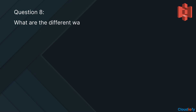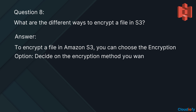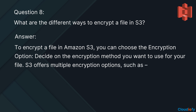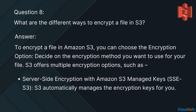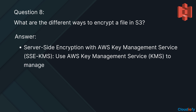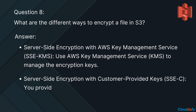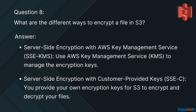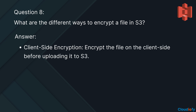The next question is: what are the different ways to encrypt a file in S3? S3 offers multiple encryption options, such as: server-side encryption with Amazon S3 managed keys, where S3 automatically manages the encryption keys for you; server-side encryption with AWS Key Management Service (KMS), where you use AWS KMS to manage the encryption keys; server-side encryption with customer-provided keys, where you provide your own encryption keys for S3 to encrypt and decrypt your files; and client-side encryption, where you encrypt the file on the client-side before uploading it to S3.